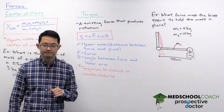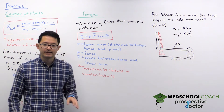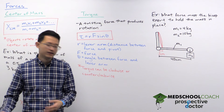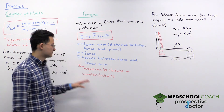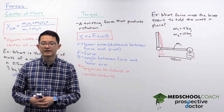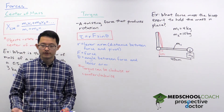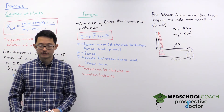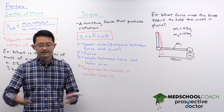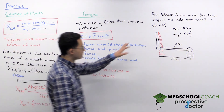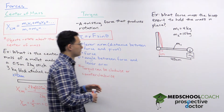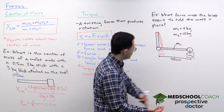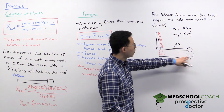With forces we think about directions like up, down, left, right. With torque we don't use those directions. Instead, torques can produce clockwise rotation or counterclockwise rotation. To see how this works, let's look at a biologically relevant example involving a person's arm — specifically the forearm holding a mass.